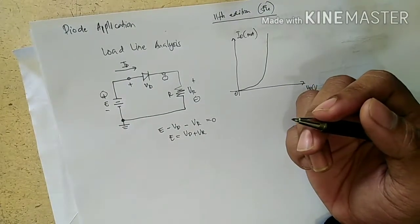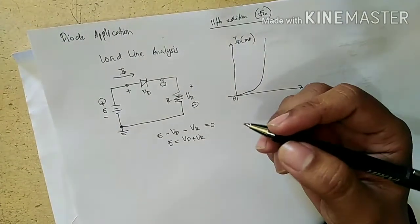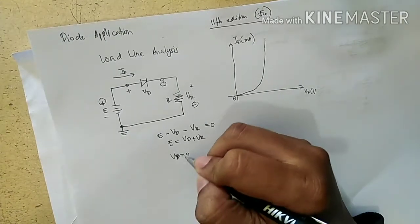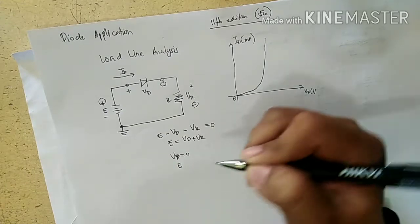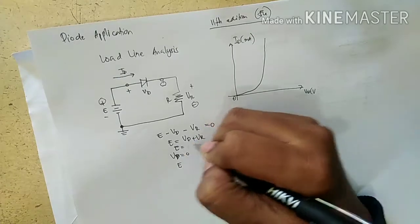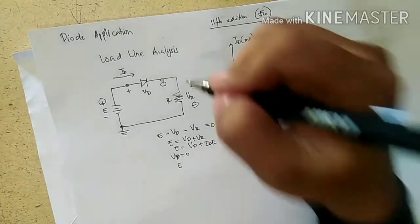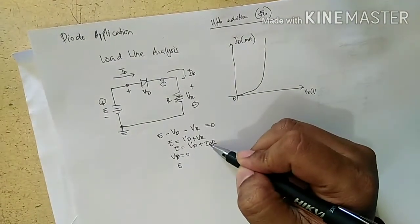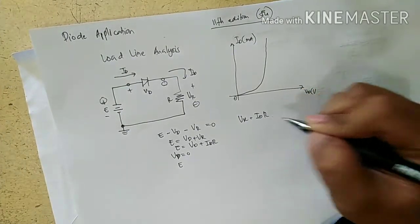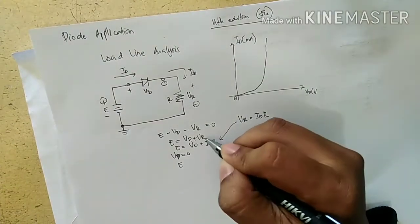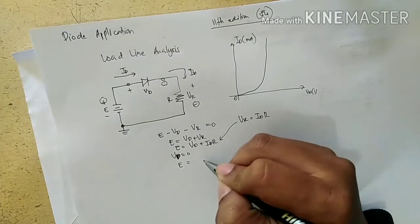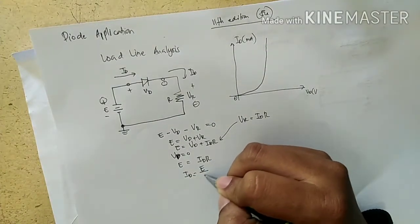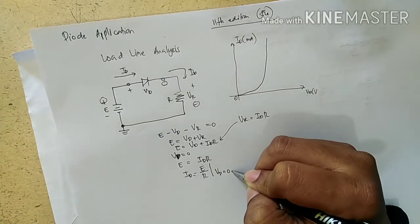You can determine the load line of the diode by equating VD equal to zero. So if you let VD equal to zero, this will be E. By the way, E is equal to VD plus ID times R. Since this is series, current is equal also to ID. So VR is also equal to ID times R. If you let VD be equal to zero, therefore ID equals E divided by R, where VD is equal to zero volts.